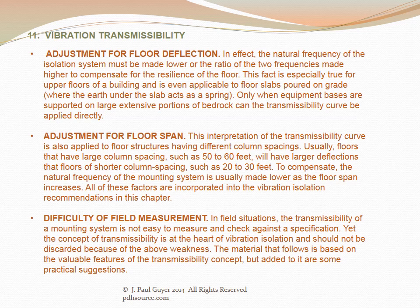The natural frequency of the isolation system must be made lower — or the ratio of driving to natural frequency made higher — to compensate for floor resilience. This is especially true for upper floors and floor slabs poured on grade where the earth acts as a spring. Floors with large column spacing (50–60 feet) have larger deflections than those with shorter spacing (20–30 feet). Consequently, the natural frequency of the mounting system is usually made lower as floor span increases, and all these factors are incorporated into the vibration isolation recommendations.